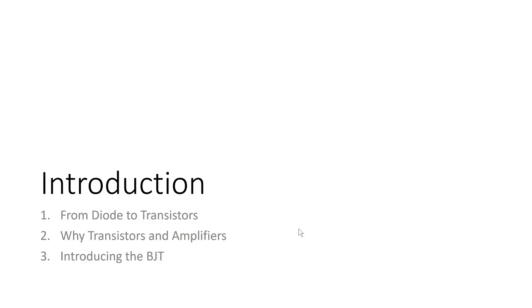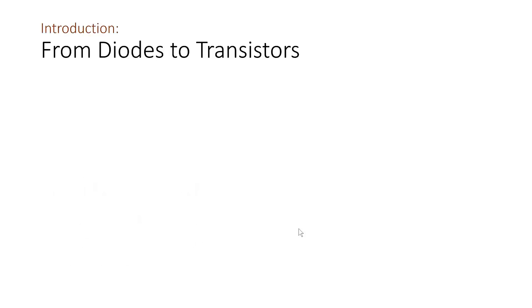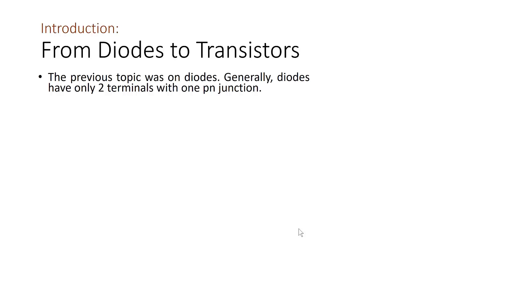Before we go into the topic, we will be introduced to the BJT — the Bipolar Junction Transistor. Moving from diodes to transistors: the previous topic was on diodes, which generally have only 2 terminals with 1 PN junction, with a voltage across it (V device) and a current through it (I device).